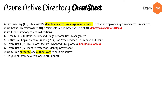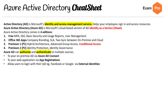Azure AD can authorize and authenticate to multiple sources. If you're doing on-premises, you're going to be using Azure AD Connect. If it's for a web app, you're using App Registration. If you're using Facebook or Google, you're using External Identities. You can also connect to Office 365 or Azure Microsoft.